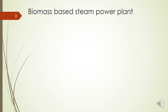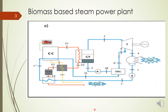Now let's look at how a biomass-based steam power plant works. This is a typical biomass-based steam power plant. The input biomass is first combusted in a combustion chamber, and that heat is used for generating steam — similar to a boiler. We transfer this heat to the boiler for converting water into steam. This portion is similar to the normal Rankine cycle.